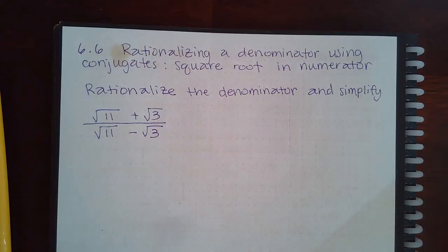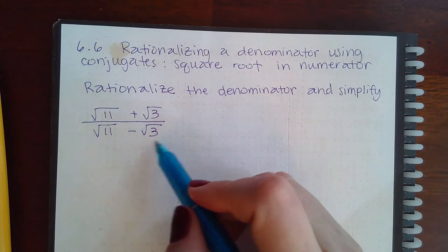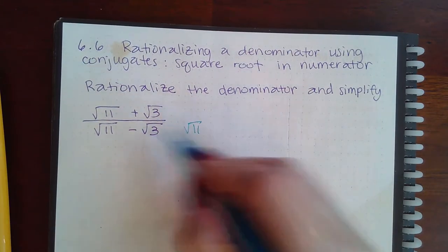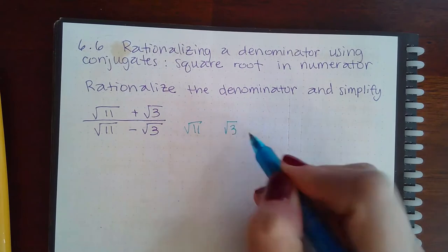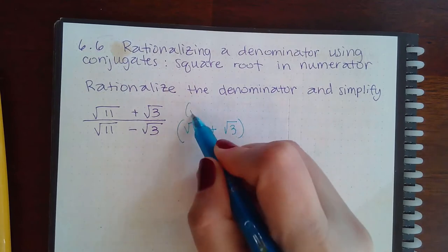Here we have rationalizing a denominator using conjugates with the square root in the numerator. So rationalizing the denominator, we have to use the conjugate of the denominator because that's where we want the radicals to go away. So the conjugate of this is going to be √11 + √3, and whatever I do to the bottom I have to do to the top.